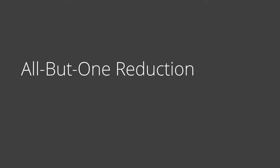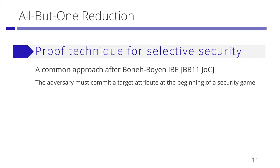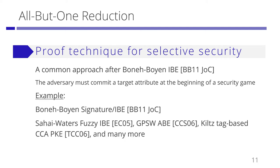What is an all-but-one reduction? All-but-one reduction is a proof technique for selective security. After Boneh-Boyen used this technique for their IBE scheme, it became a common approach to prove selective security. In the selective security game, the adversary must declare a target attribute at the beginning of the game. There are many public key cryptographic schemes that use all-but-one reduction.